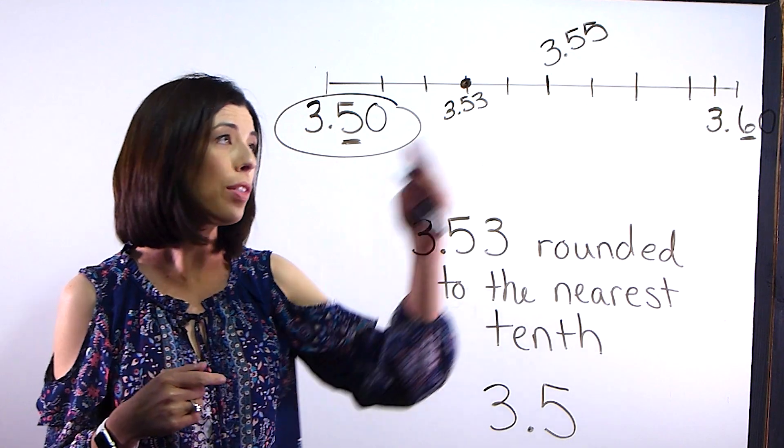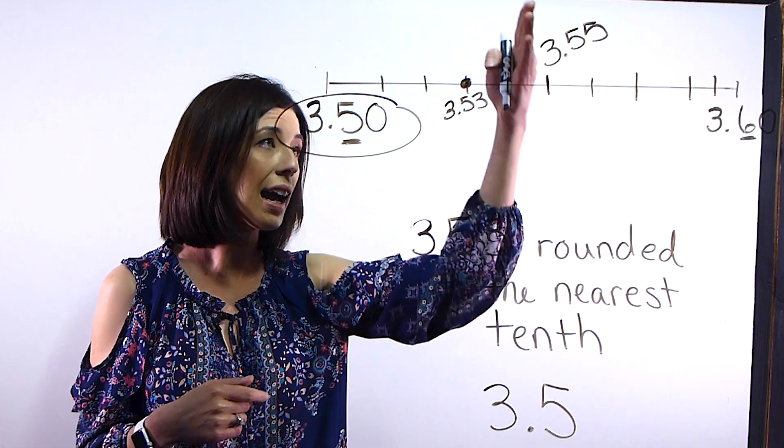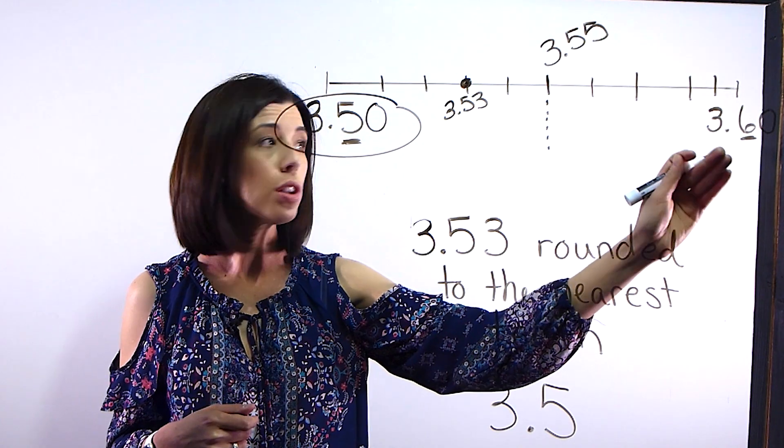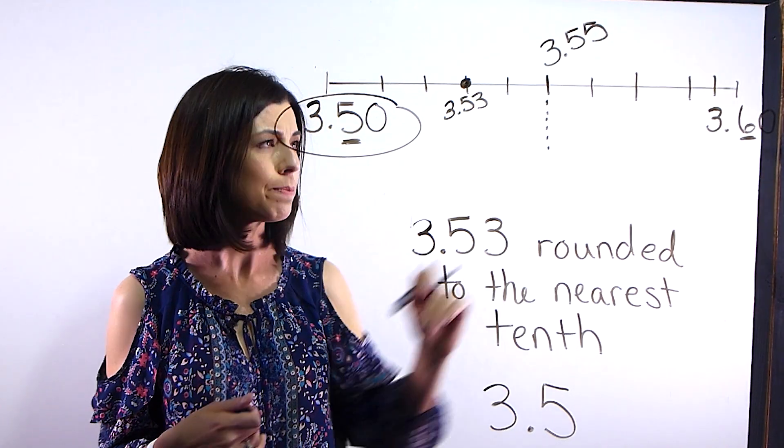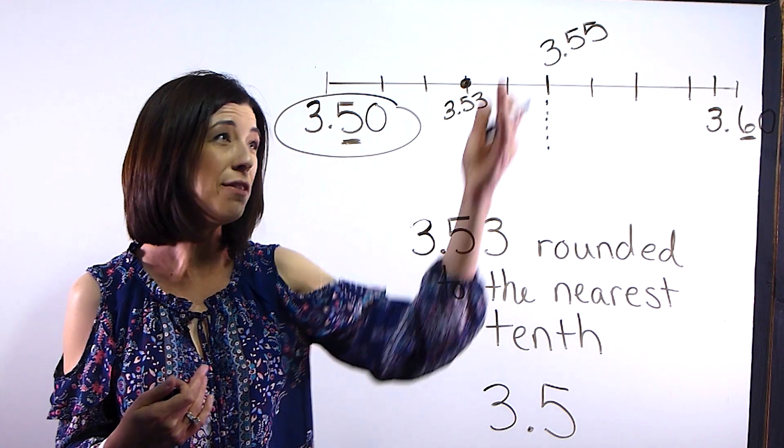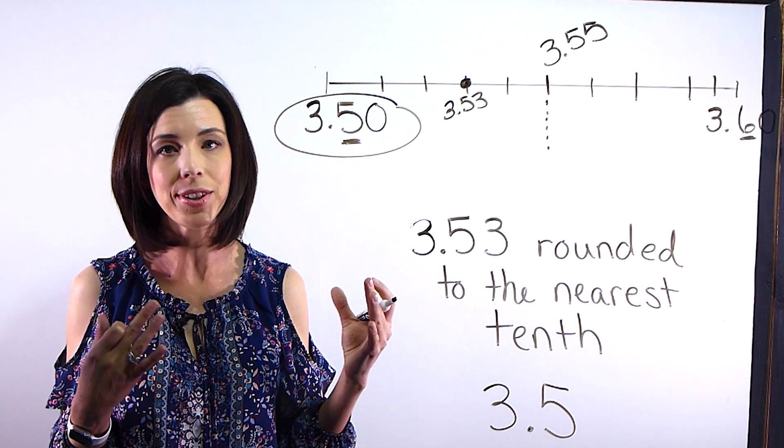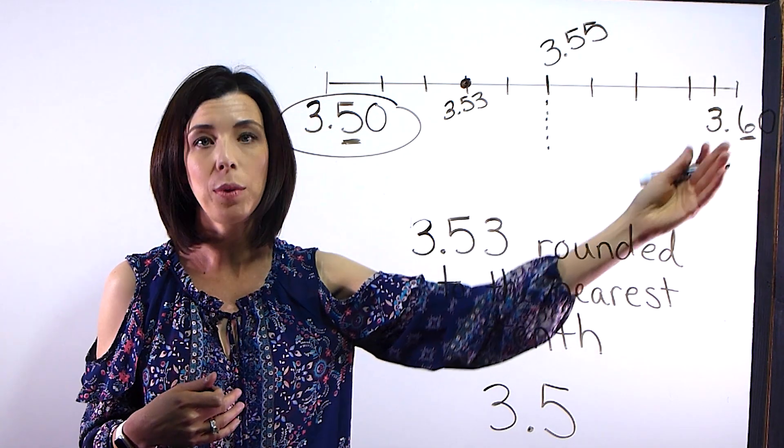Now, if it was a decimal that would have been plotted on the other side of this midline here, then it would have been closer to 3 and 6 tenths or 3 and 60 hundredths. Now you might be thinking, well, what if it's directly in the middle? If it's directly in the middle, we have a common understanding that you are going to always round up.